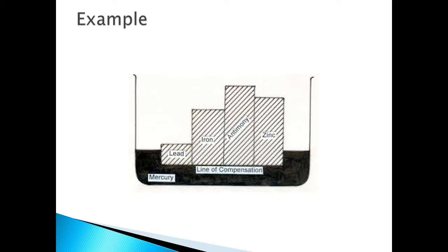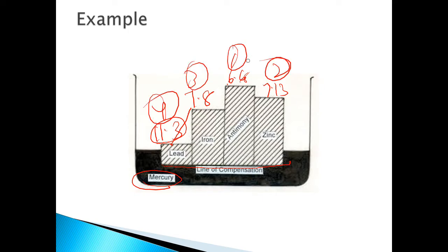He gave an example using mercury with a density of 13.56 grams per cubic centimeter as the level of compensation. Above this he placed lead at 11.3, iron at 7.8, antimony at 6.68, and zinc at 7.13 grams per cubic centimeter, showing how density varies with antimony being the least dense.